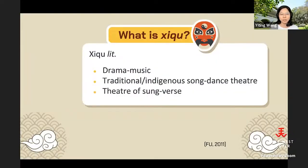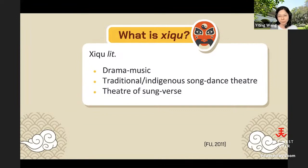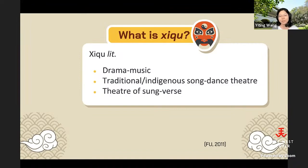Xiqu is literally translated as drama, theater, or opera, and 'qu' means music. Combining them together, it's drama music. Sometimes people call it traditional song-dance theater, indigenous song-dance theater, or theater of the song verse. As a translator by training in the Xiqu world, we actually prefer the direct term 'Xiqu' rather than calling it traditional Chinese theater or Chinese opera, but you will hear me using those terms today.